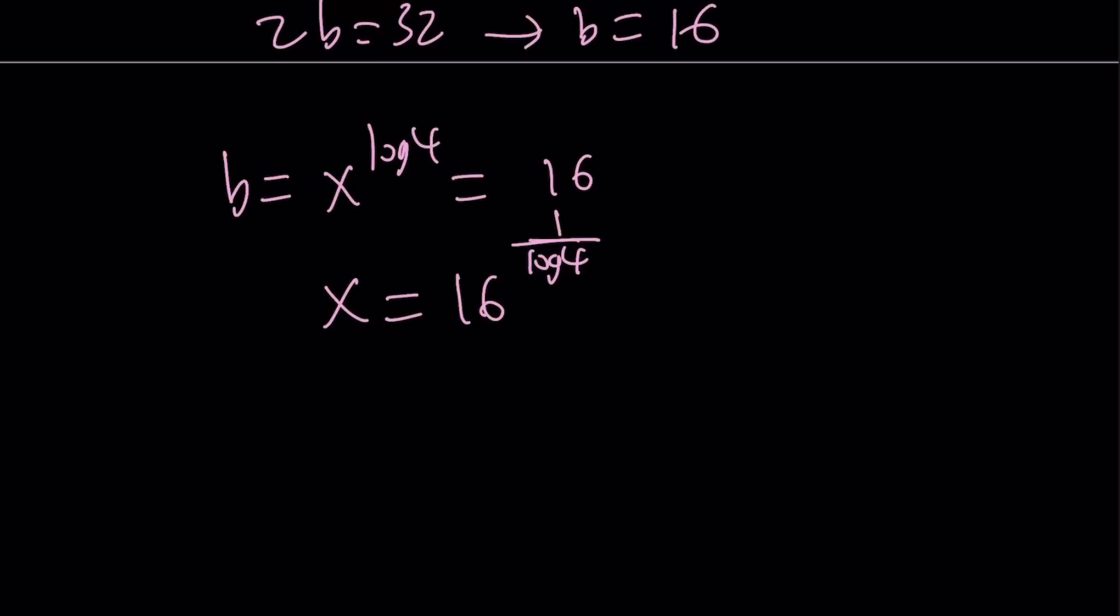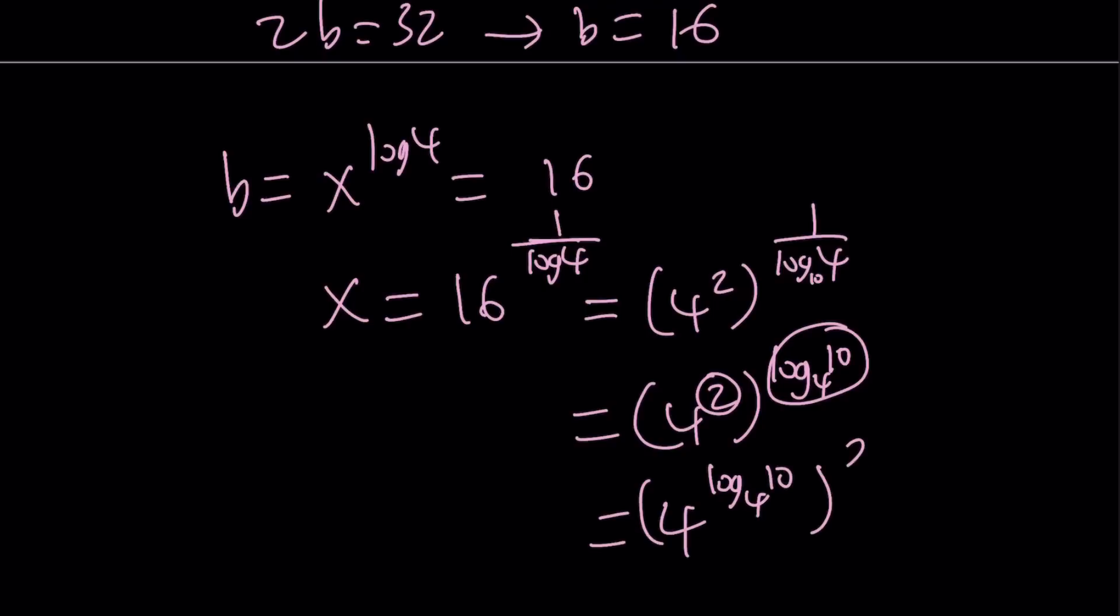How do you simplify this? I can go ahead and write this as 4 squared to the power 1 over log 4, and then I can just go ahead and write 1 over log 4 as log 10 with base 4, because when you have the reciprocal, you just switch these numbers around. Make sense? And then you can go ahead and switch the 2 and this one, because they're both exponents. 4 to the power log 10 base 4 to the power 2, but remember our property, this is 10. The answer is 10 squared, which is equal to 100.